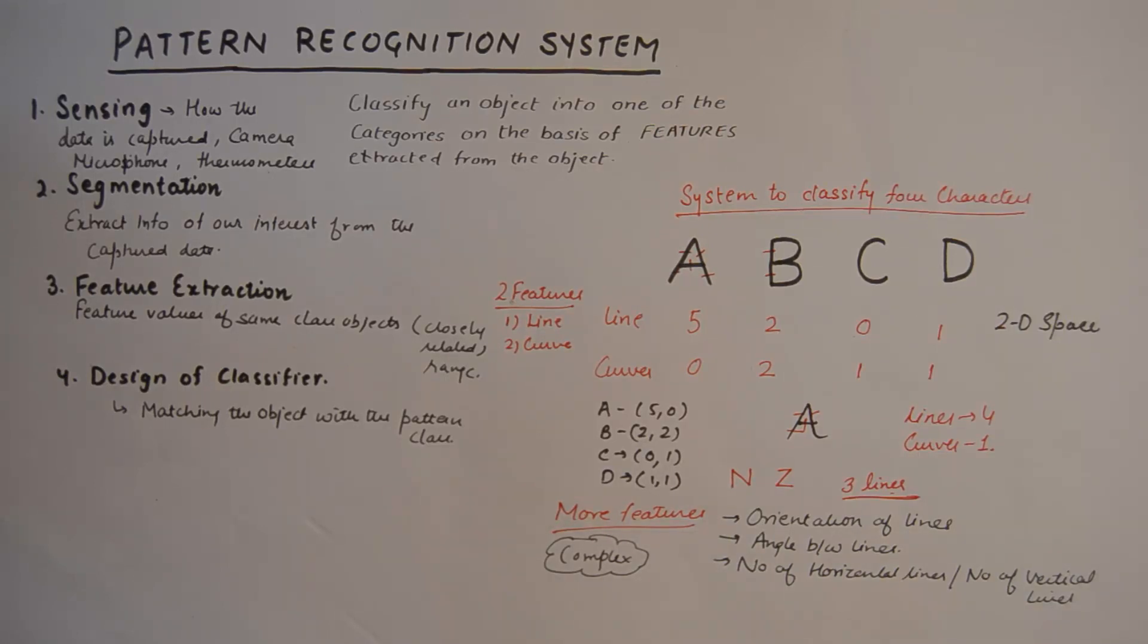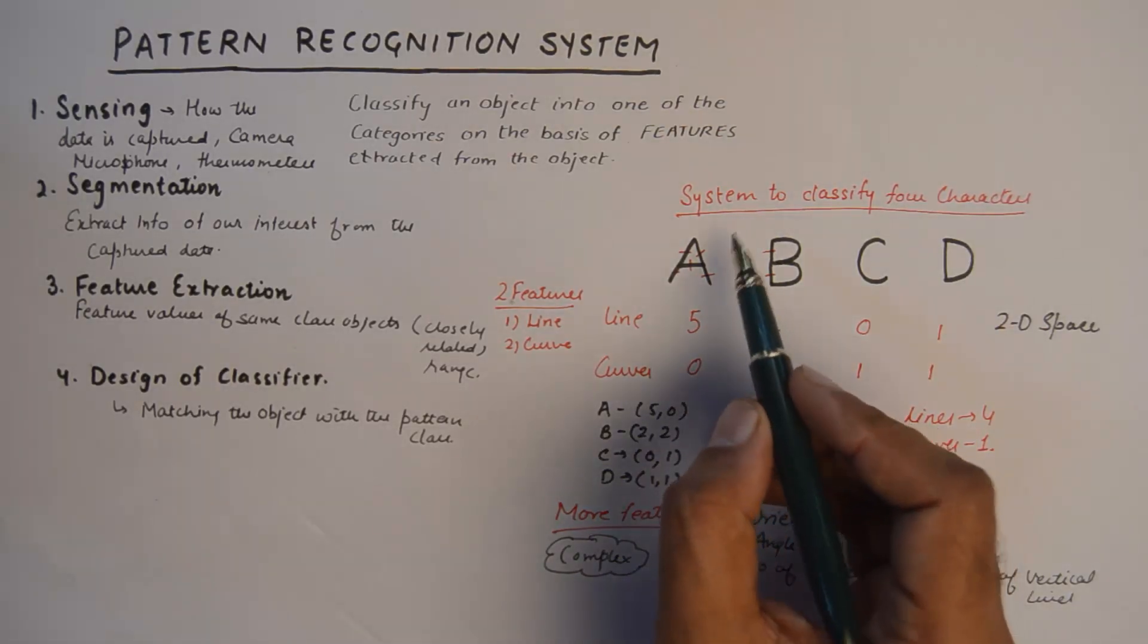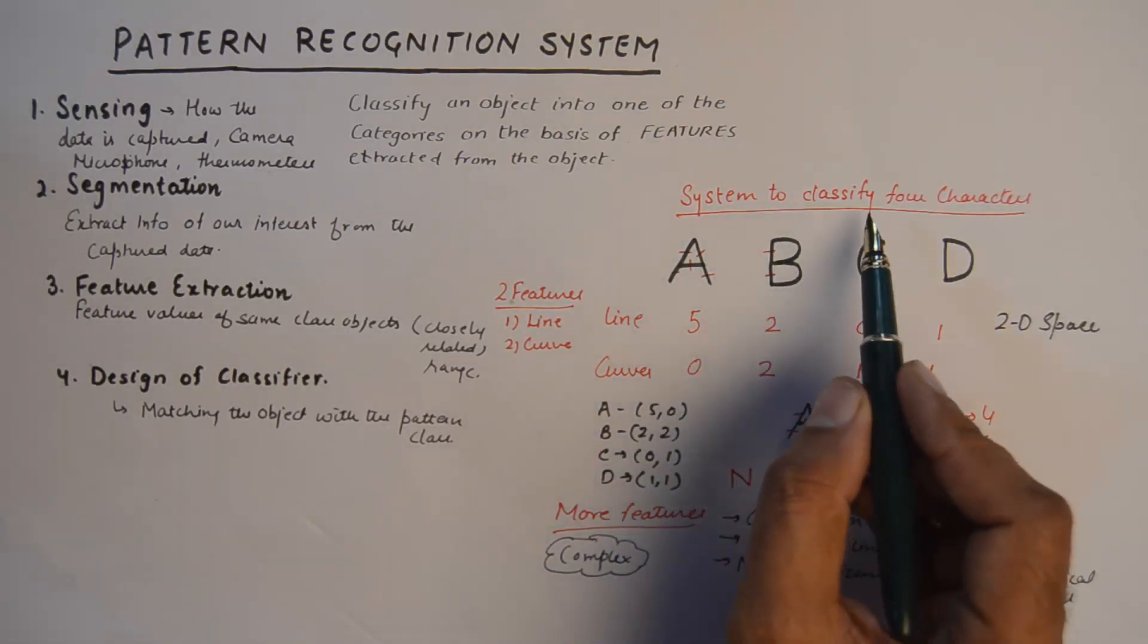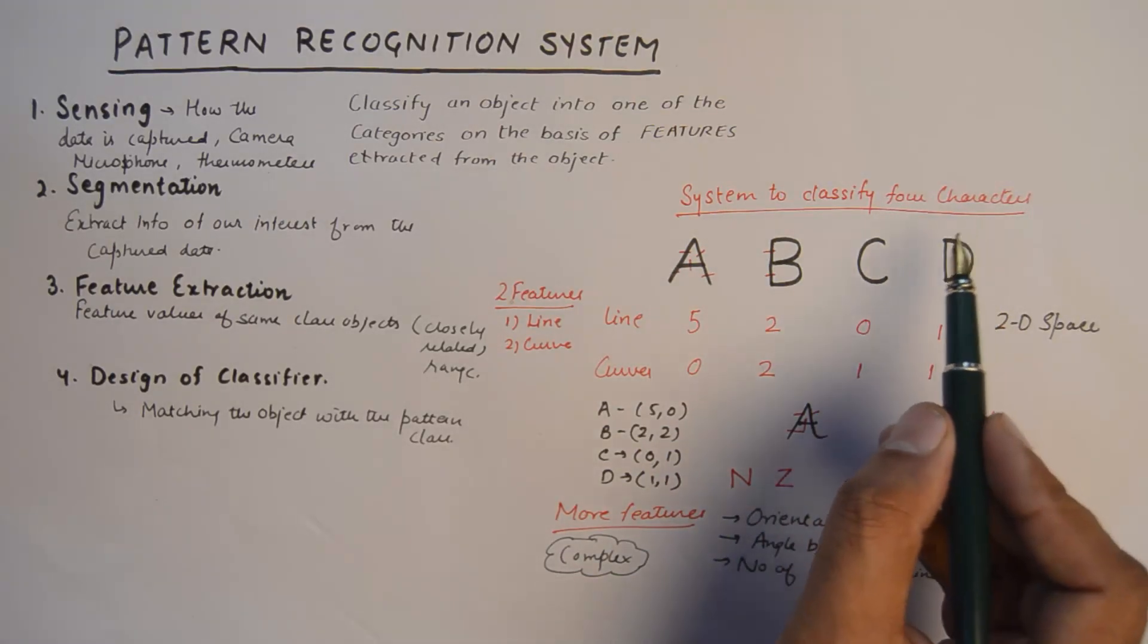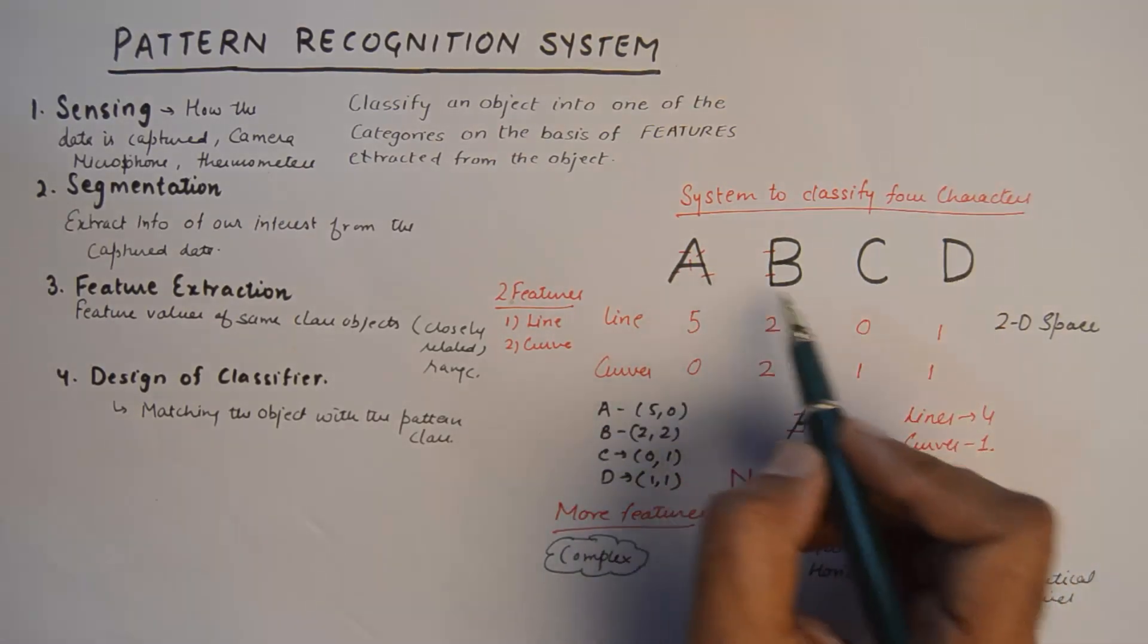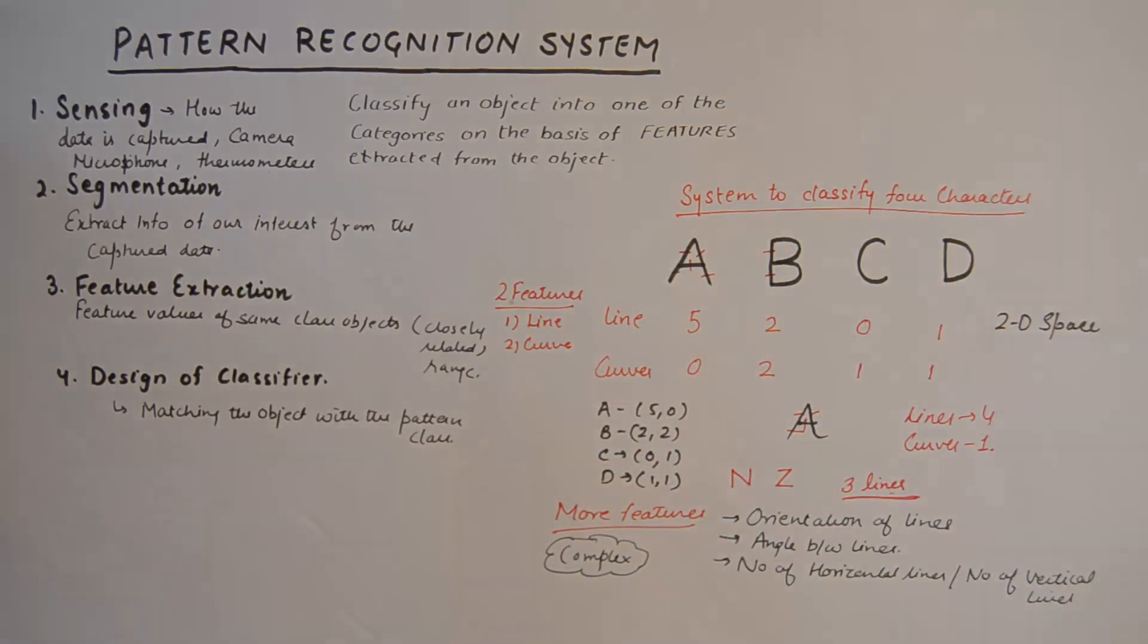In order to understand a pattern recognition system—how can we start developing a system to recognize a pattern—I've taken up a small example. We need to build up a system that can classify four characters: A, B, C, D.